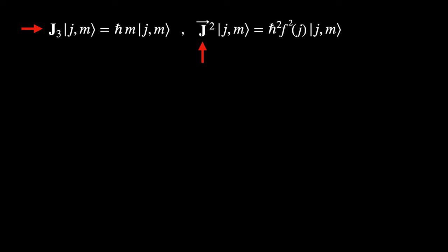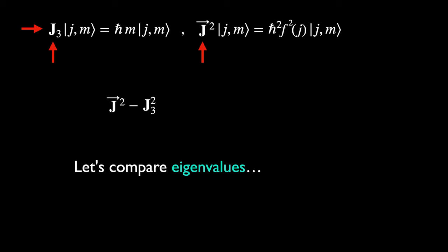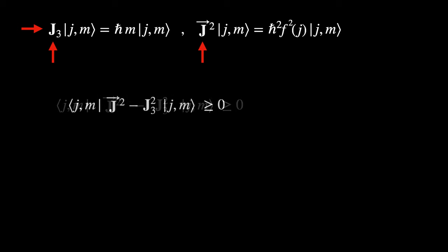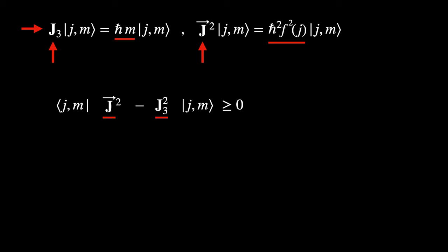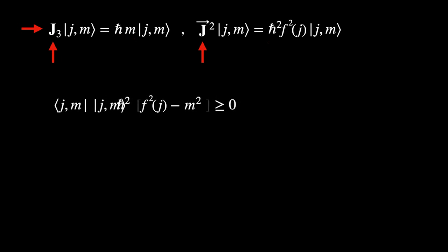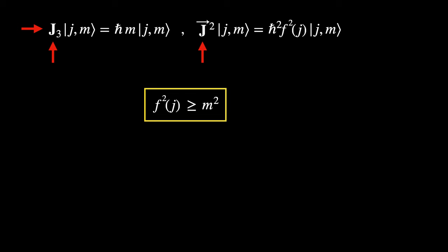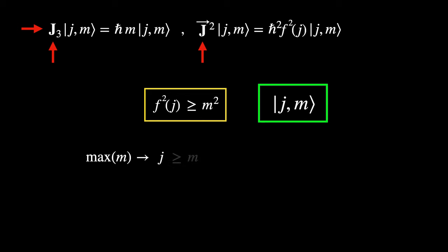We can compare the eigenvalues of J-squared and the square of its third component by taking the bracket of their difference with respect to their shared eigenstates. Since this is just the sum of J1-squared and J2-squared, both square operators, by the same argument this bracket must be positive. Now we can plug in the respective eigenvalues. Thus F-squared must be greater than or equal to M-squared for any state |J,m⟩. This relates F-squared to the maximum of M, so we define the argument J to actually be the maximum value of M, and we shall denote the minimum to be J-prime.